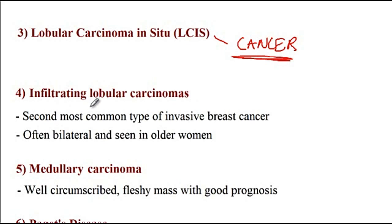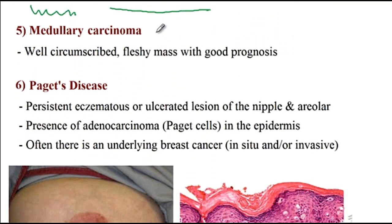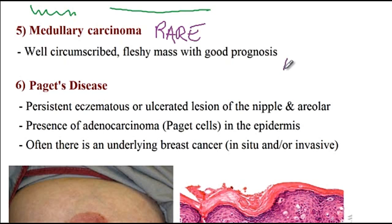Next is infiltrating, also known as invasive lobular carcinoma. After ductal carcinoma, this is the second most common type of invasive breast cancer. This cancer is often bilateral and more often seen in older women. Next, medullary carcinoma is a very rare breast tumor presenting with well-circumscribed lesions with a fleshy mass appearance and good prognosis. Histology shows hemorrhage with necrosis and lymphocyte infiltrate.